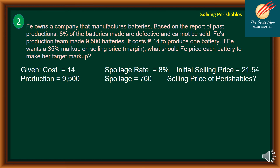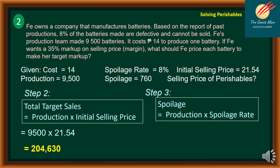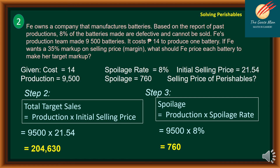Step 2: Find total target sales. Total target sales equals production times initial selling price: 9,500 times 21.54 equals 204,630 pesos. Step 3: Find the spoilage. Spoilage equals production times spoilage rate: 9,500 times 8% equals 760 batteries.